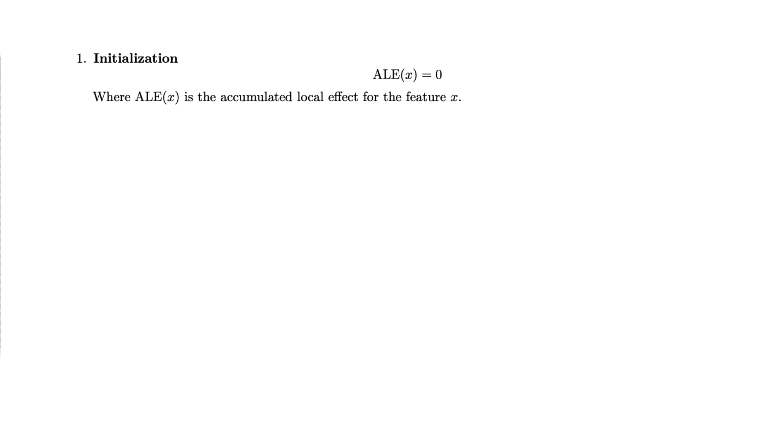So there is a mathematical formula for an ALE, but I'll save you from it this time. It's still worth going through a more formal algorithm, so there's no confusion with how the plots are created. We find the ALE for a given feature X using these steps. Step one, we initialize the ALE. We set the accumulated local effect for the feature X to zero.